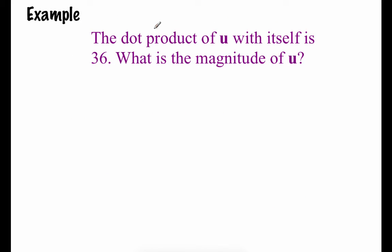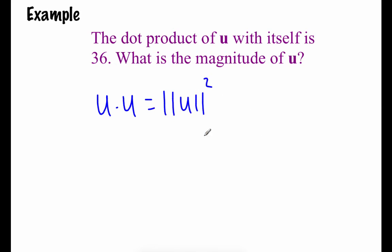In this example, we're told that the dot product of vector u with itself is 36, and we want to find the magnitude of vector u. One of those properties says if we do u dotted with itself, the answer is the magnitude squared. So if the answer is 36, we just take the square root: the magnitude of vector u is 6.